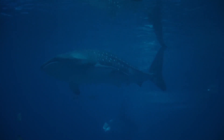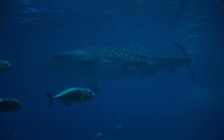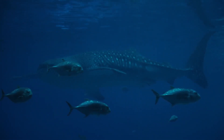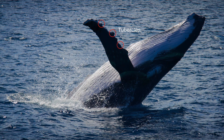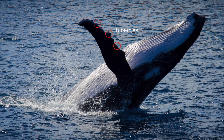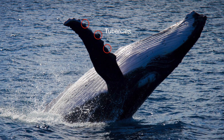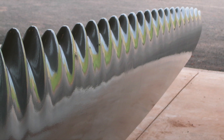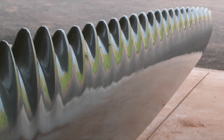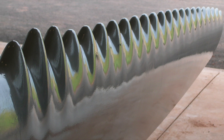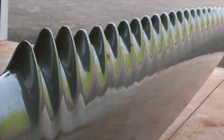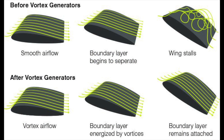Humpback whales, one of the great behemoths of the oceans, are extremely maneuverable despite being one of the largest species of whales. They have large rounded tubercles along the leading edge of their flippers, which act as passive flow control devices. Experimental analysis of finite wing models has demonstrated that these tubercles produce a delay in angle of attack until stall, increasing maximum lift by up to 4.8% and decreasing drag by up to 40%. The delay of stall is achieved through vortex generation, modification of the boundary layer, and an increase in effective span by reducing span-wise flow and the strength of the tip vortex.